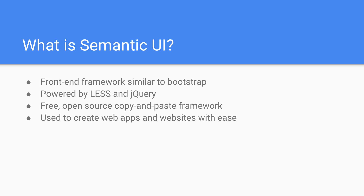What is Semantic UI? Semantic UI is simply a front-end framework, very similar to Bootstrap. If you guys have ever used Bootstrap before, this course should be a breeze. I personally have found Semantic UI even more enjoyable to work with than Bootstrap. For those of you who have never used Bootstrap before, don't worry about it — Bootstrap is not necessarily a requirement here. We'll show you how to do things without it. Semantic UI is powered by LESS and jQuery, and this means that it's a free open-source copy-and-paste framework. Everything on the website is open source — you can literally copy and paste the code and you're not going to face any repercussions. In fact, it's almost encouraged that you do so. And we can use Semantic UI to create web apps and websites with ease.